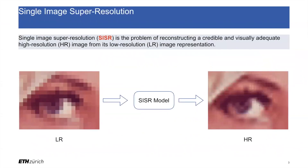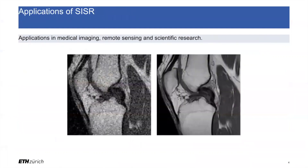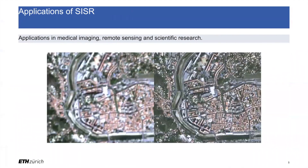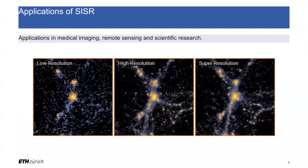To more concretely define the problem of single image super-resolution, or SISR, it is that of reconstructing a credible and visually adequate high-resolution image from its low-resolution representation. SISR finds applications in medical imaging, remote sensing, and scientific research, to name but a few domains.